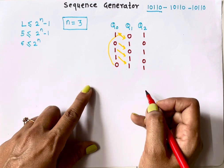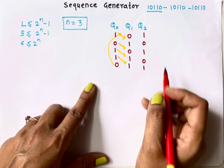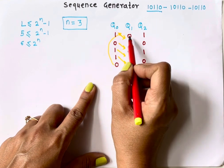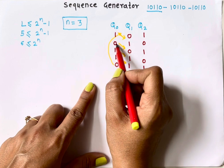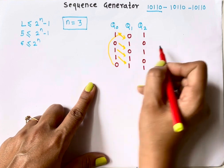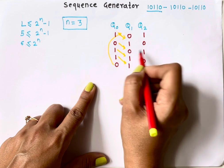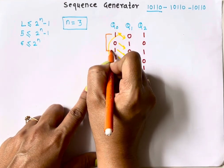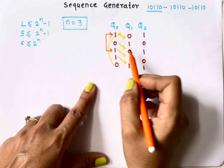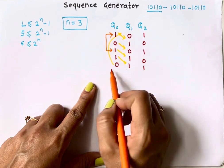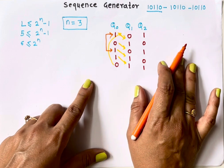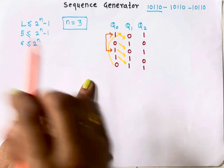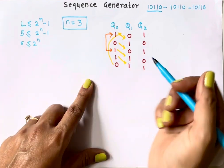Now, this is the important step — we need to identify if any state is repetitive. My first state is 1, 0, 1. Looking through the states: 0, 1, 0 and then 1, 0, 1 again. These two states are the same. If any state repeats, the simple rule is we need to add one more flip-flop.